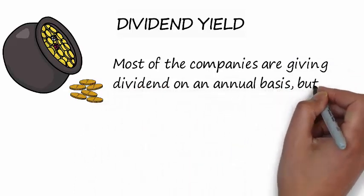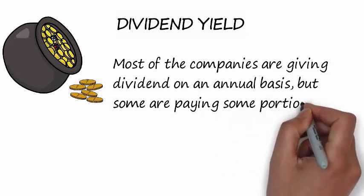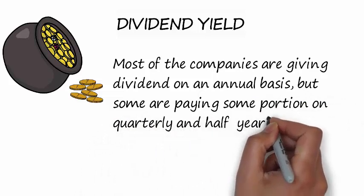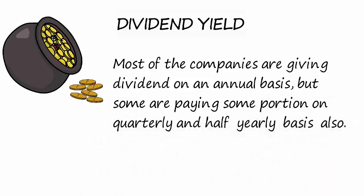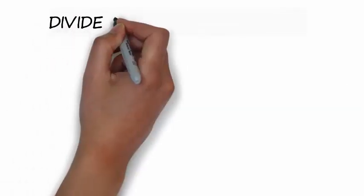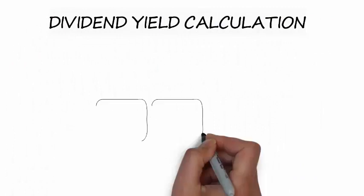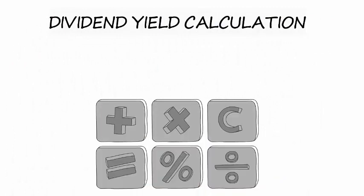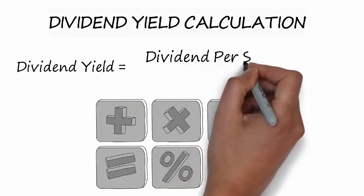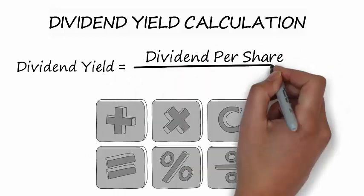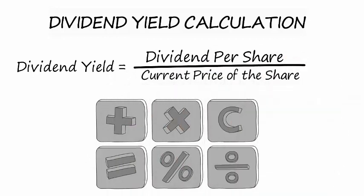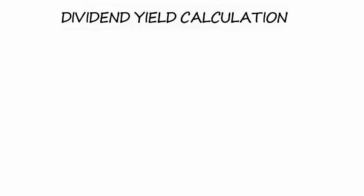Most companies pay dividends on an annual basis, but some pay a portion on quarterly and half-yearly basis also. For dividend yield calculation purposes, the total dividend paid in the full financial year will be used. The formula for dividend yield calculation is: Dividend Yield = Dividend Per Share ÷ Current Market Price of the Share.